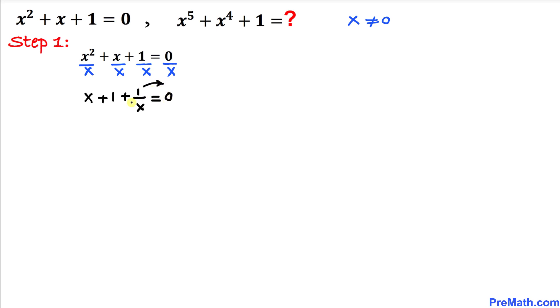Now let's simplify: x² divided by x is x, x divided by x is 1, and 1 divided by x equals 0. Let's move the 1 over x to the other side. So we get x + 1 = -1/x. Let me call this equation number 1.